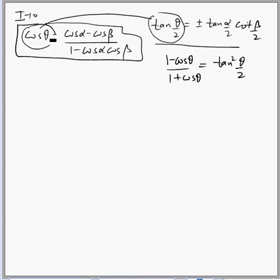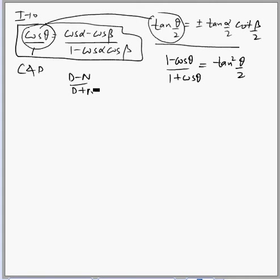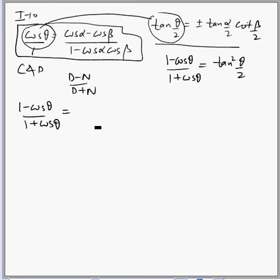Now how to generate 1 minus cos θ over 1 plus cos θ here on this part — for that we apply Componendo and Dividendo. So we apply the operation: D minus N over D plus N, that is subtract numerator from denominator to get 1 minus cos θ in the numerator; in the denominator add numerator and denominator. So we apply this operation here and get 1 minus cos θ over 1 plus cos θ.